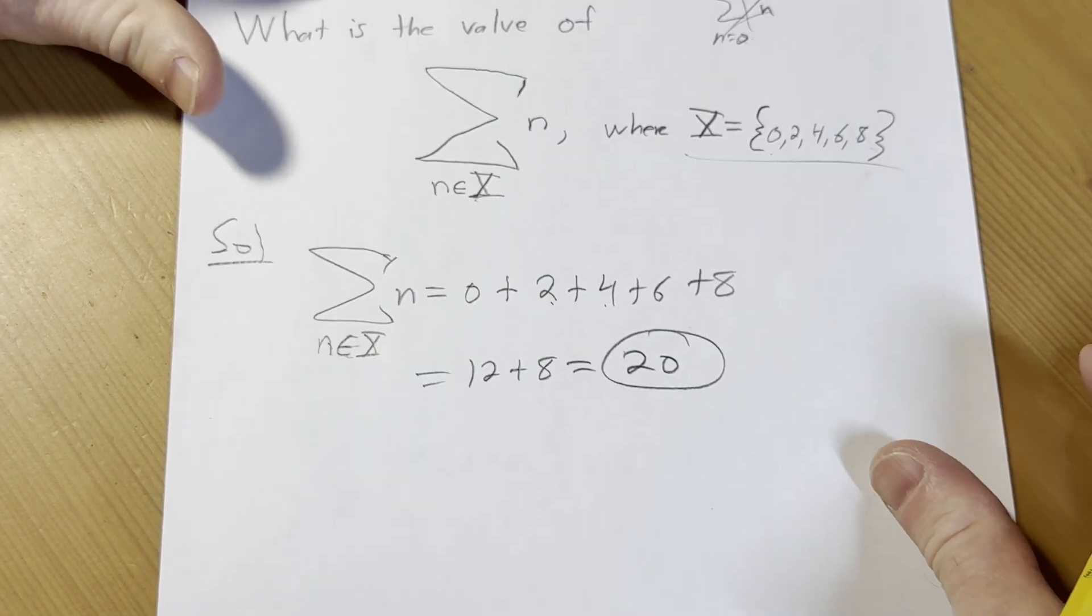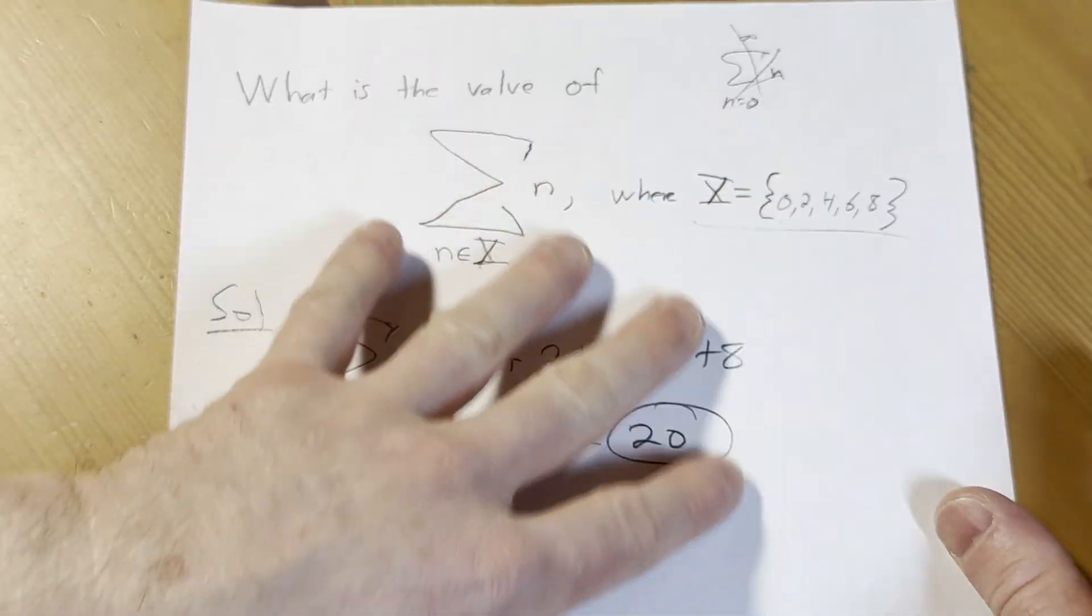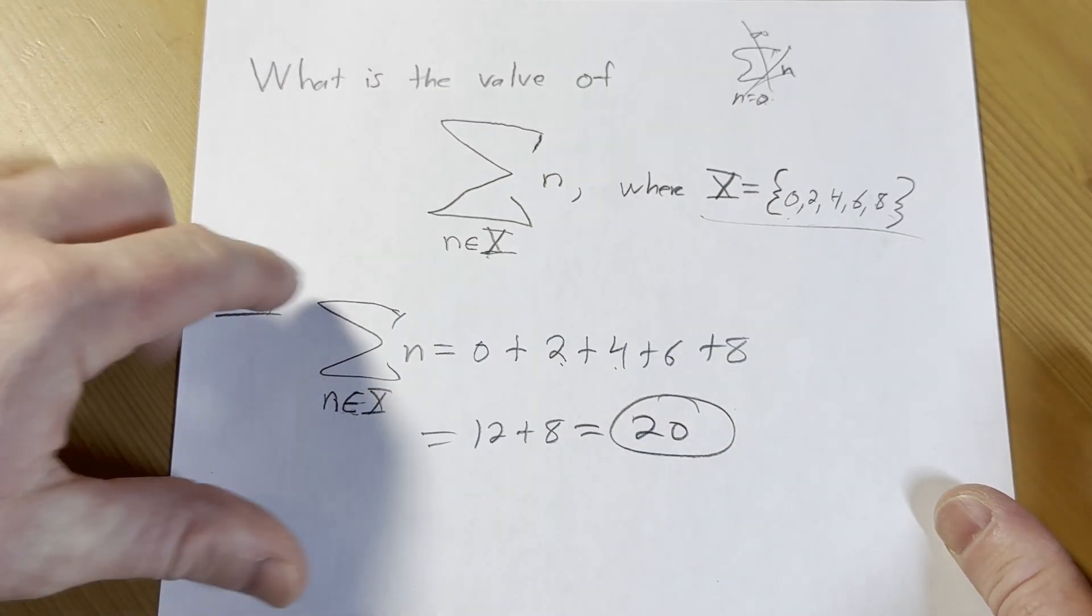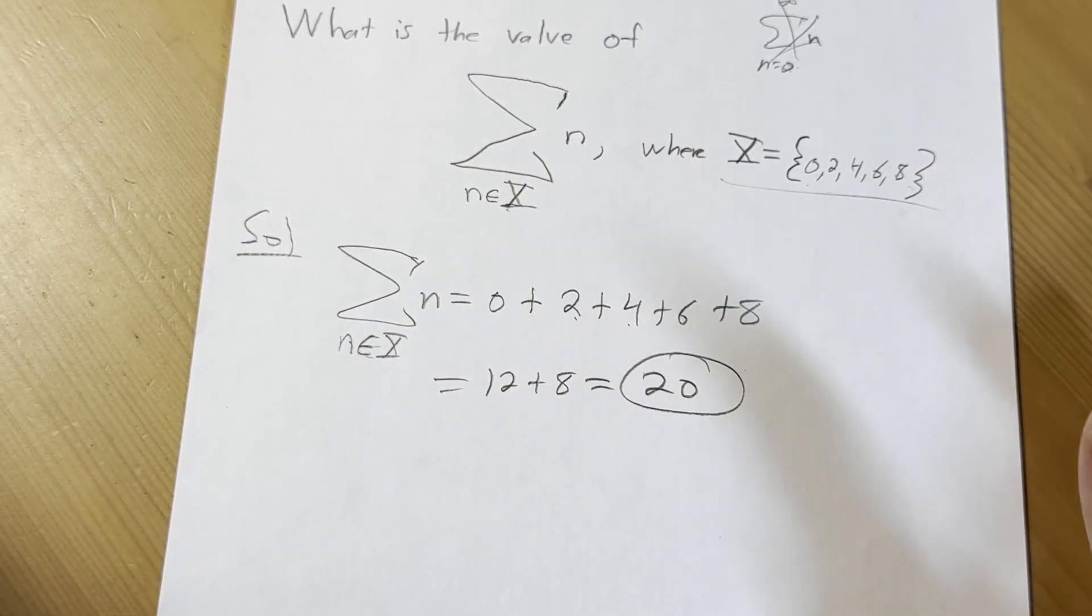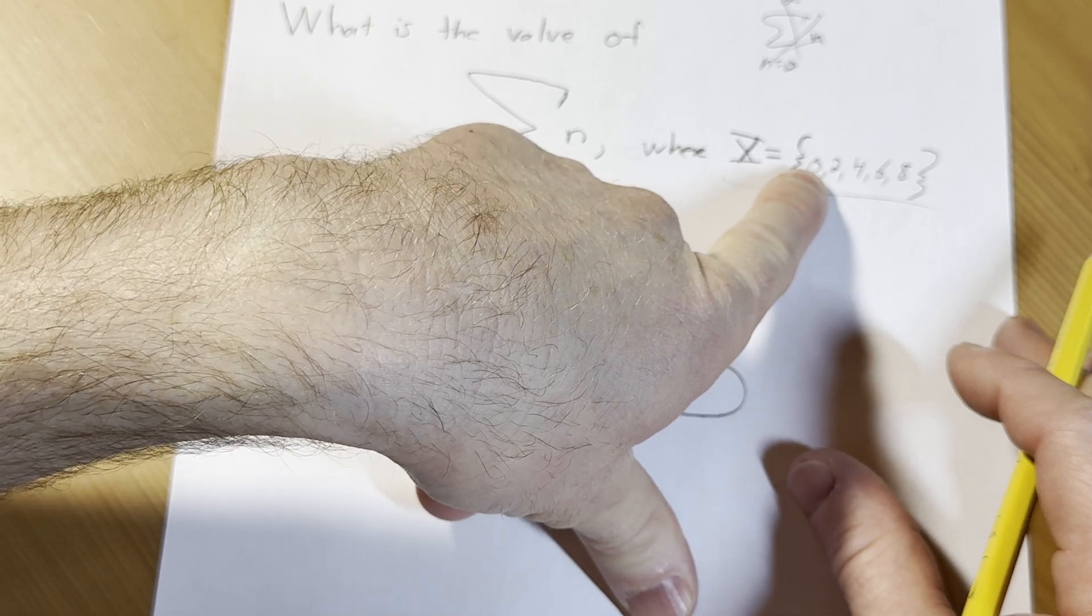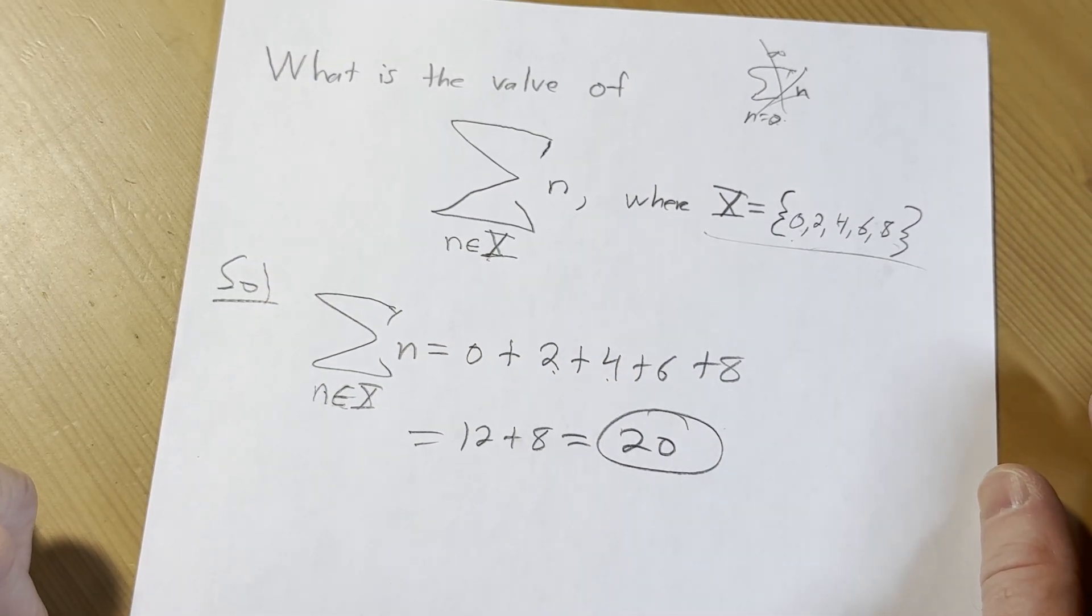So pretty easy. So there you have it, a summation where you don't necessarily increment by 1. This is a way to do it. If you want to do it with bigger numbers, like say you want it to go from 1 to 100 and then omit all the even numbers, you could do that. You could just define a set like that, although it would get pretty laborious adding up the numbers in that case.